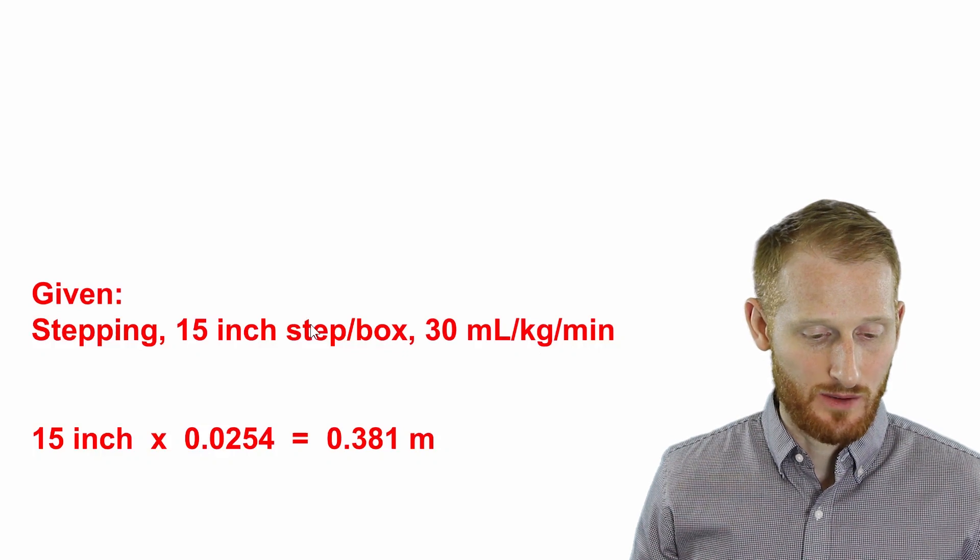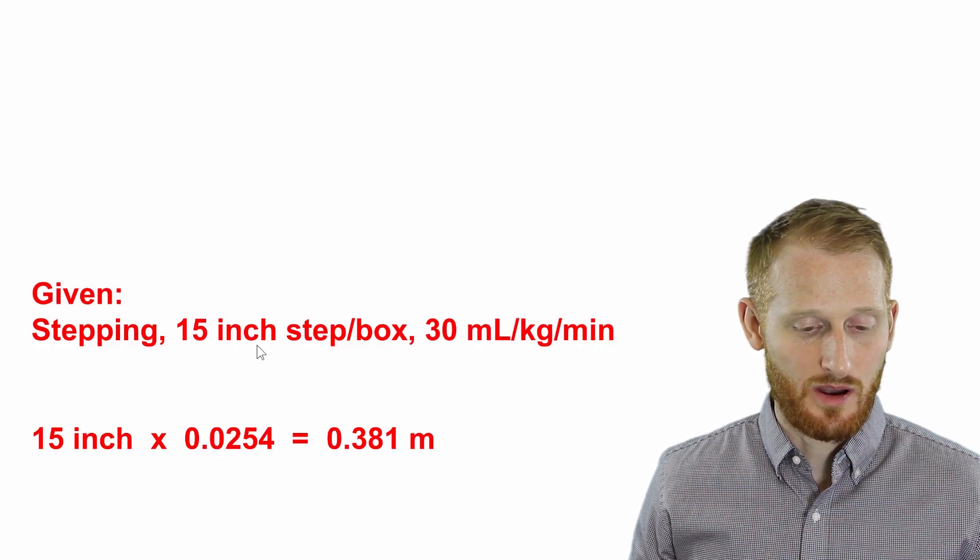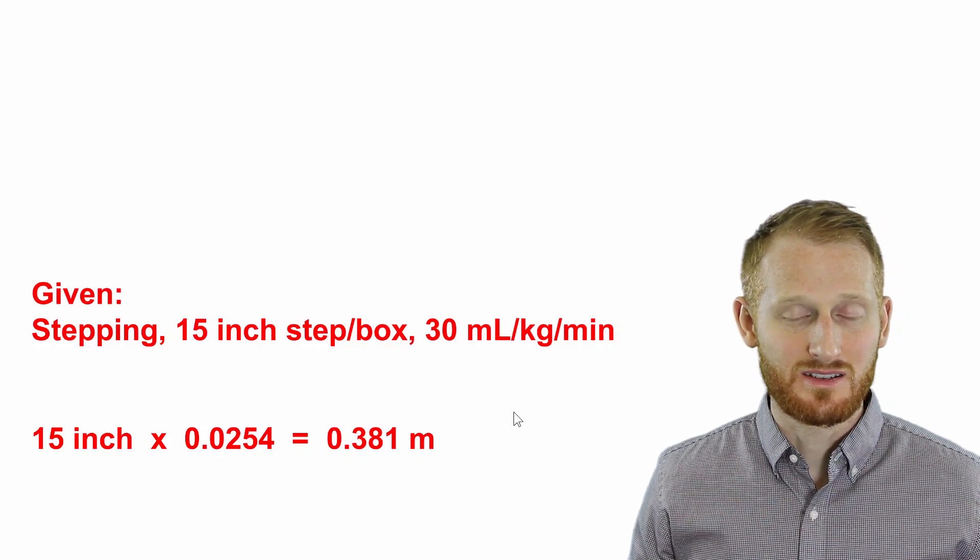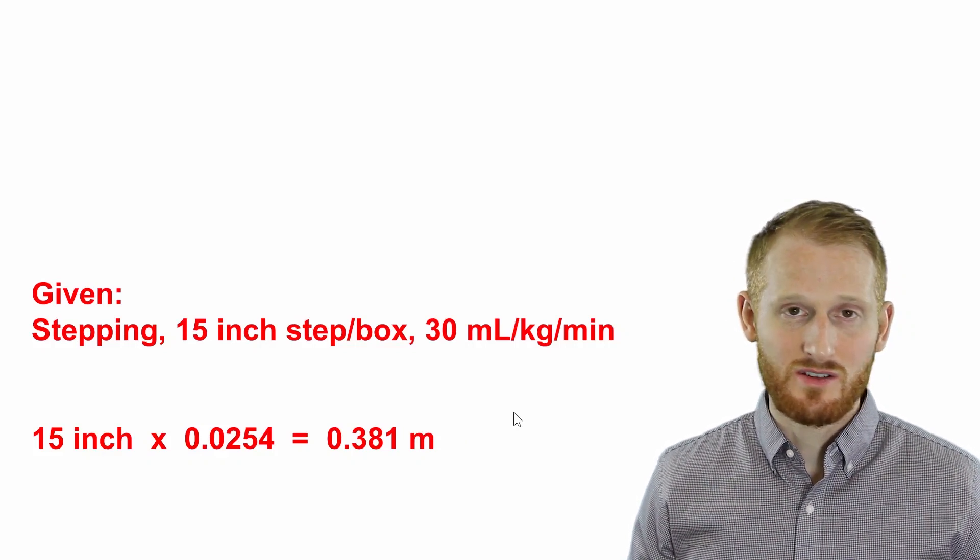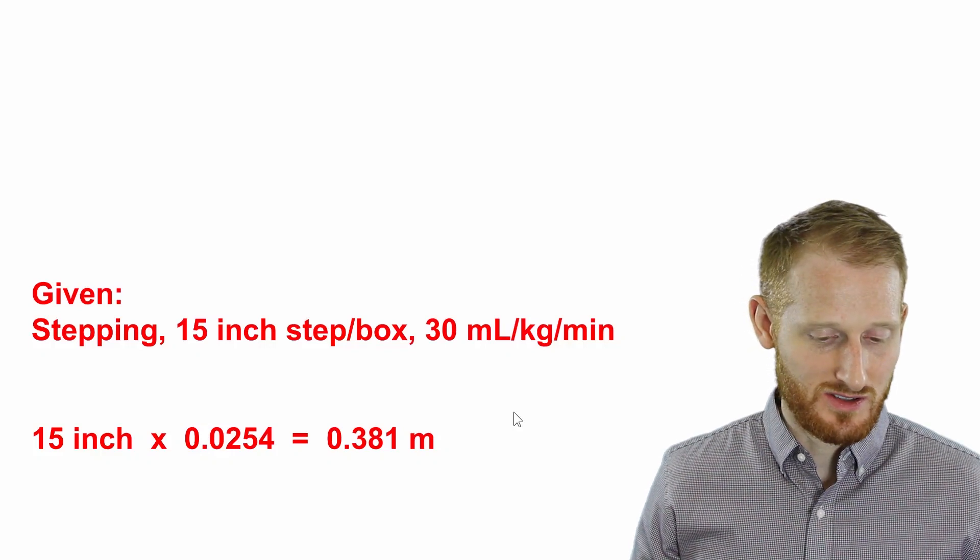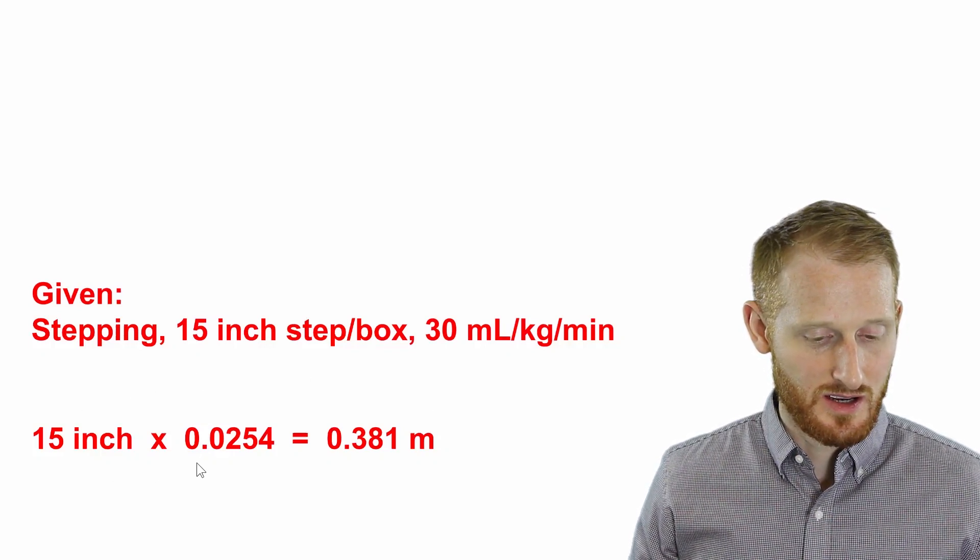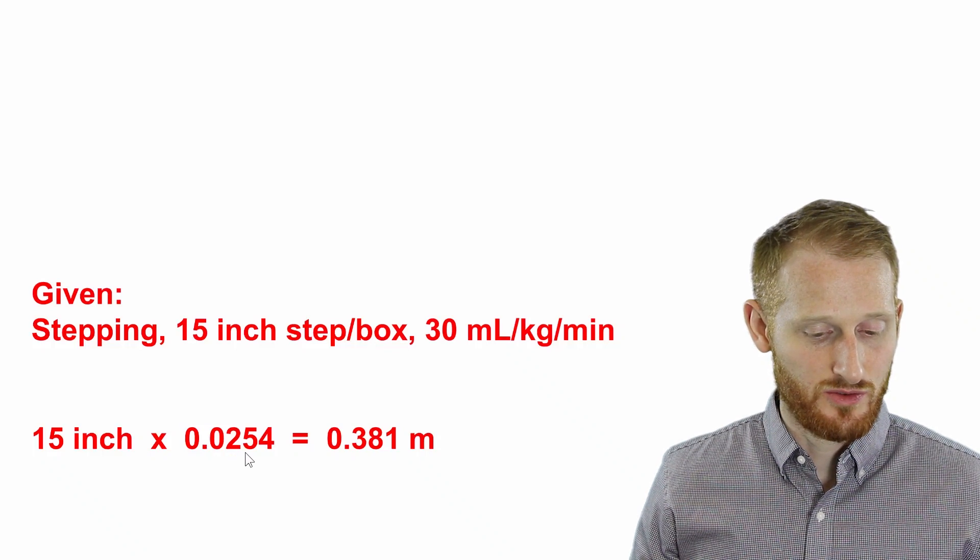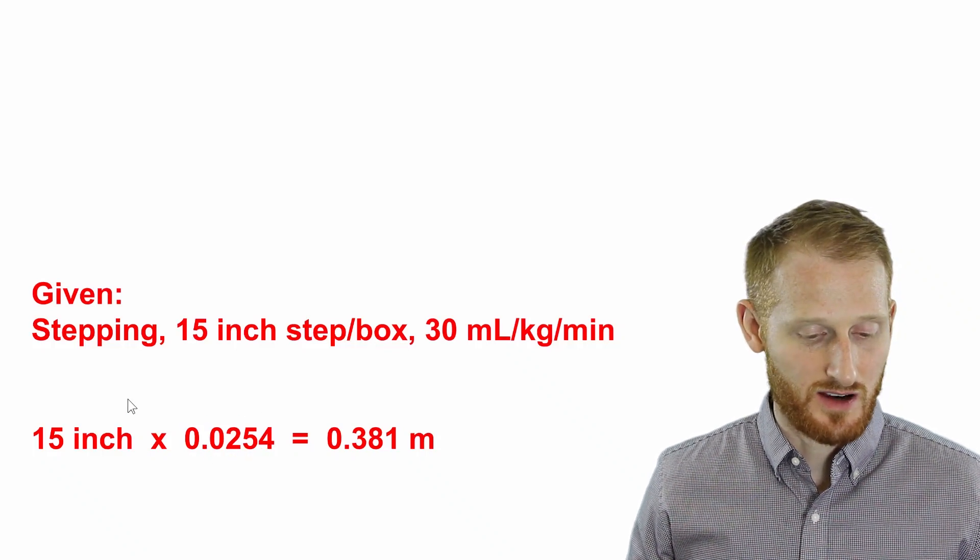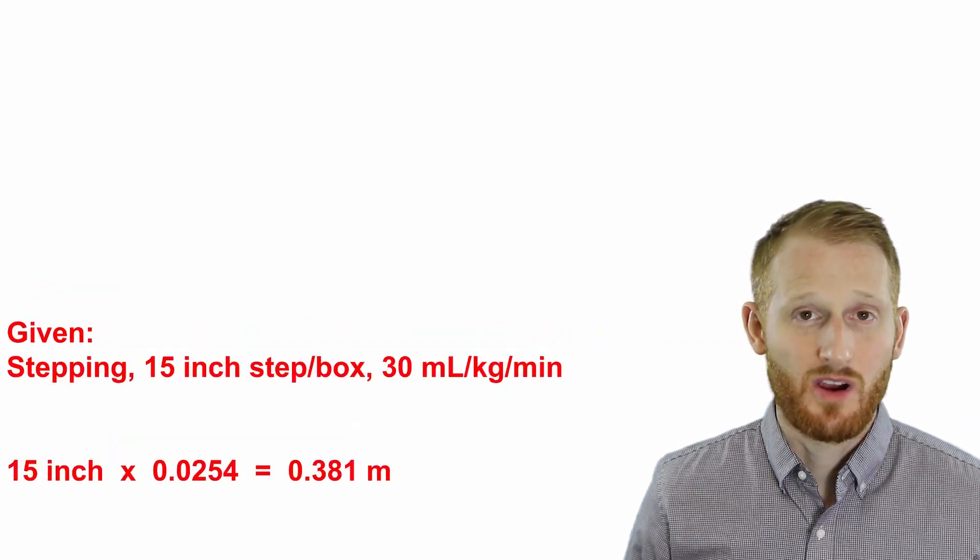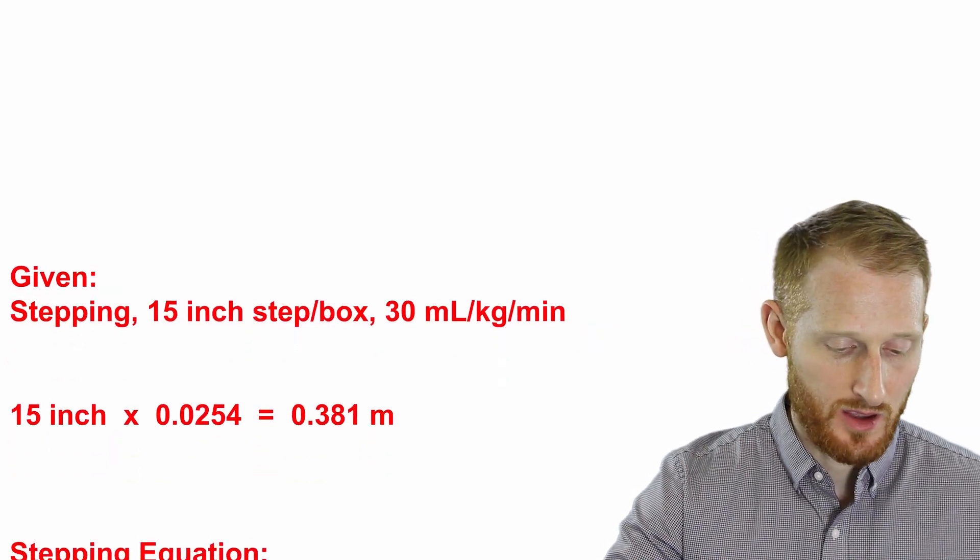First thing I'm going to do is convert the step height from inches to meters because that's what the ACSM formula is expecting. If you entered inches, you'd get incorrect values for everything else. So 15 inches times 0.0254, which is the conversion factor from inches to meters, gives you 0.381 meters.